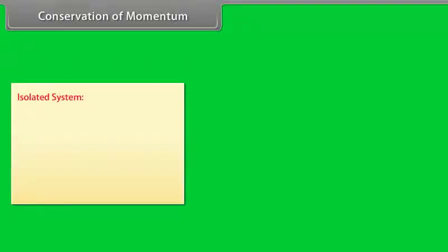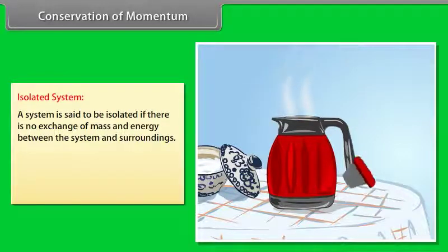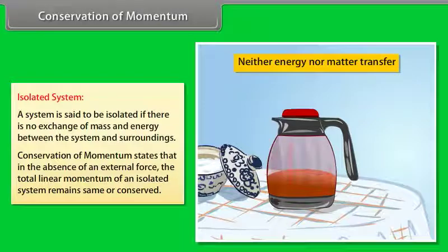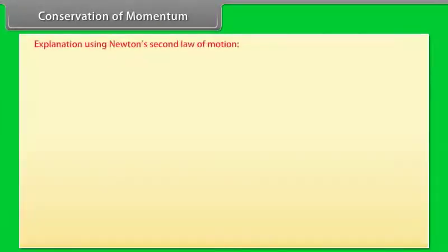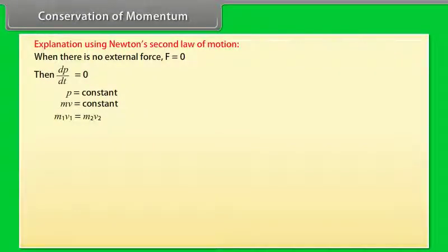An isolated system is one in which there is no exchange of mass and energy between the system and surroundings. Conservation of momentum states that in the absence of an external force, the total linear momentum of an isolated system remains the same or conserved. When there is no external force, F = 0, then dP/dt = 0, so P = constant, meaning M1V1 = M2V2.